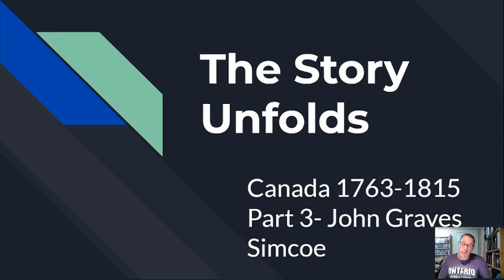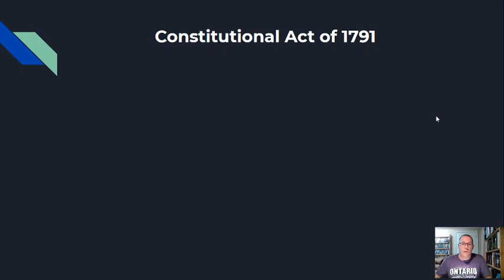Hi, Grade 7. Today in history, we are going to be continuing to unfold the story of Canada by taking a look at Part 3 — a man named John Graves Simcoe.